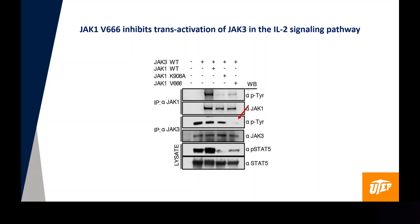The next experiments involved cells expressing the IL-2 signaling components, including overexpressed JAK1 and JAK3. These were immunoprecipitated and tested for tyrosine phosphorylation to evaluate the behavior of the mutation within the IL-2 signaling pathway. The total cell lysate was also evaluated for STAT5 phosphorylation. The results show that JAK1 B666 inhibits trans-activation of JAK3 in the IL-2 signaling pathway, as indicated exclusively by the red arrow.